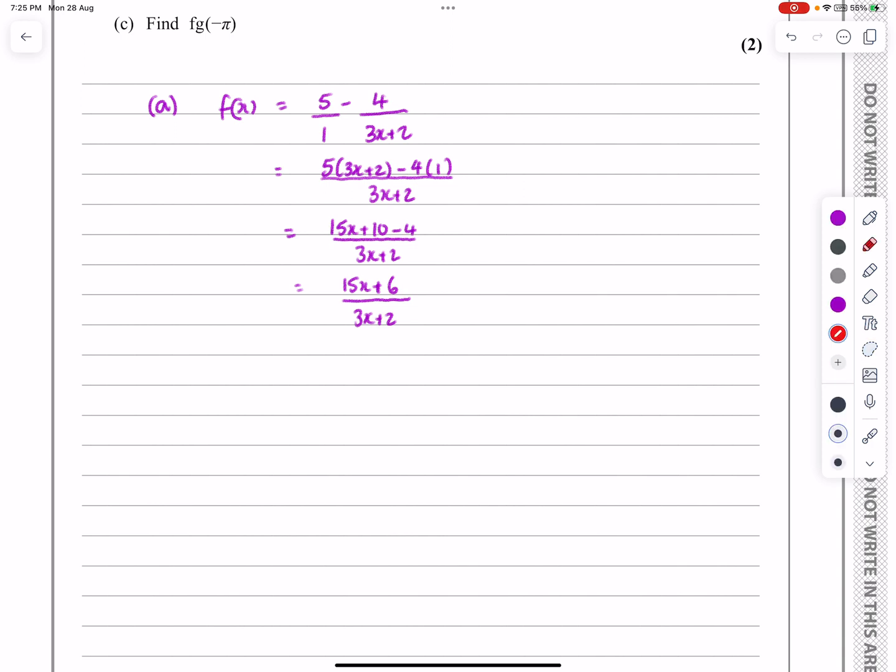I'm going to do where it hits the axes first. f(0) would just be 15 times 0 plus 6 over 3 times 0 plus 2, that's 6 over 2, that's 3. So we know it hits the y-axis at 3. At f(x) equals 0, we get 15x plus 6 all over 3x plus 2 equals 0. 15x plus 6 equals 0, rearrange that, x works out to be minus 6 over 15, which is minus 2 over 5.